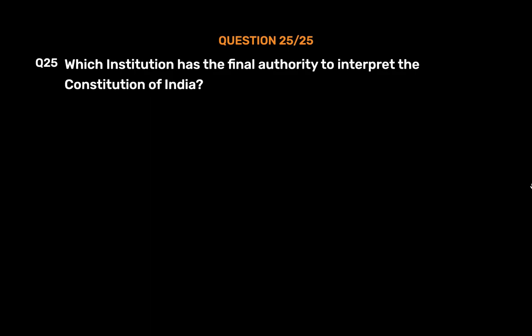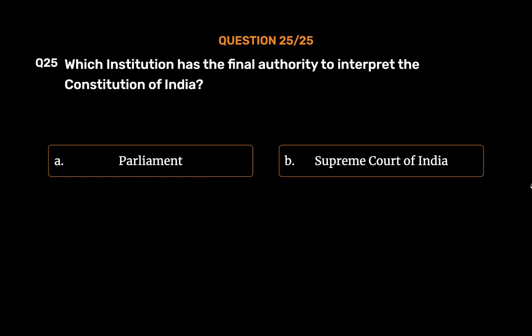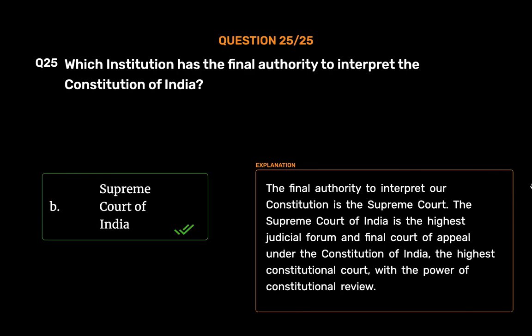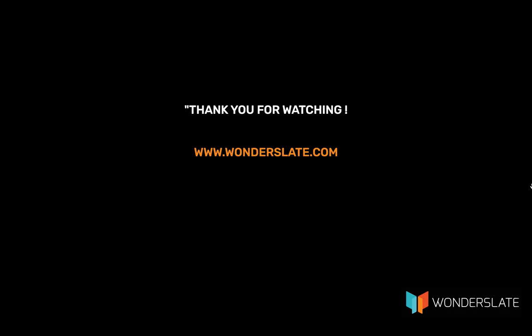Question No. 25. Which institution has the final authority to interpret the Constitution of India? Option A: Parliament. Option B: Supreme Court of India. Option C: President. Option D: Attorney General of India. The correct answer is Option B: Supreme Court of India. The final authority to interpret our Constitution is the Supreme Court. The Supreme Court of India is the highest judicial forum and final court of appeal under the Constitution of India, the highest constitutional court, with the power of constitutional review. Thank you for watching the video.